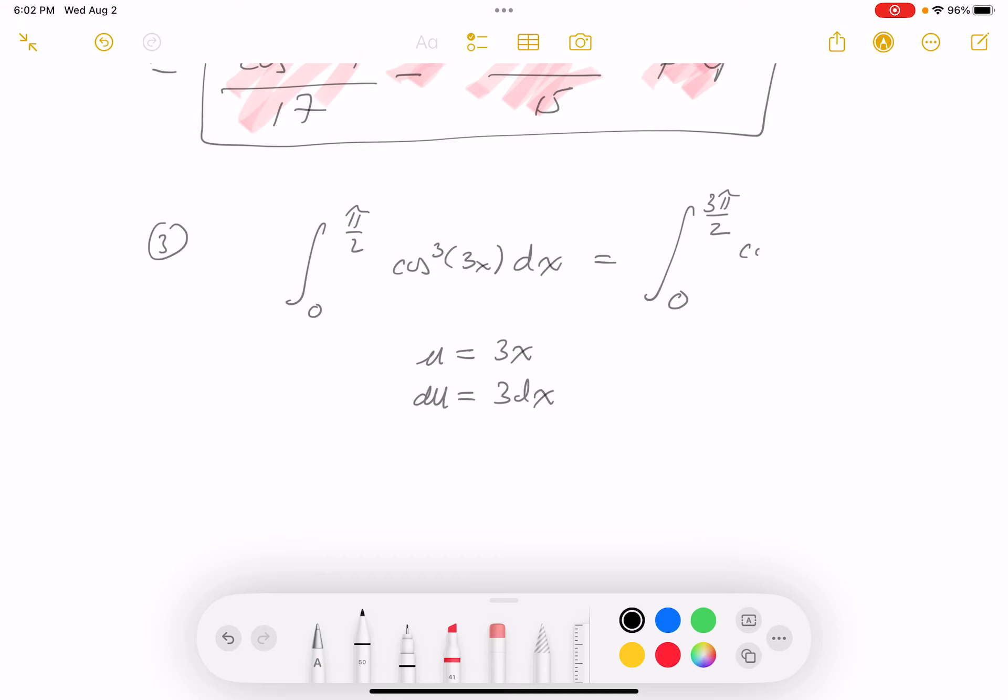All right, what do you get? Cosine cubed of u. And what's dx? It's actually one-third of a du. So I think I can handle that, and I'll tell you what I mean by that. It's one-third, 0 to 3 pi over 2.